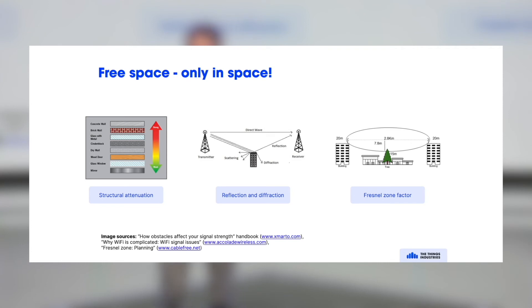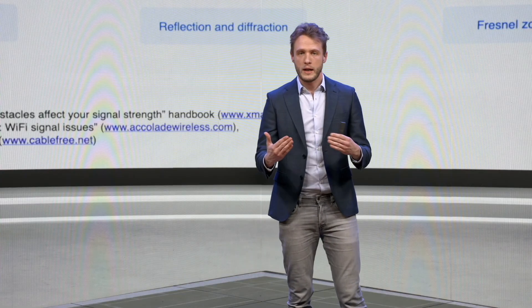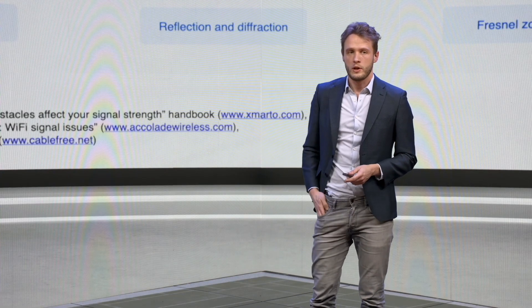There is reflection and diffraction. So there are buildings with a lot of glass that reflect the RF signal. And also there is a Fresnel zone. So even if you have a line of sight, still there has to be a lot of line of sight basically around it to communicate well. So all these factors negatively influence the range.